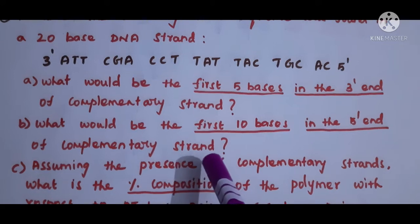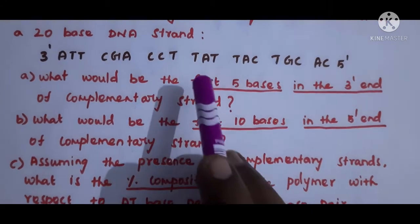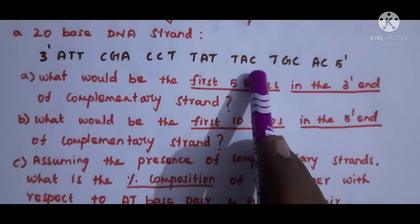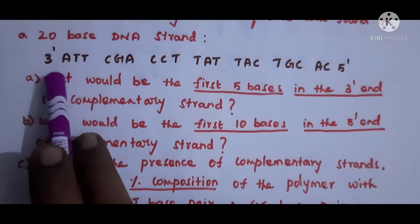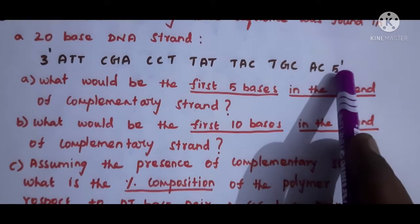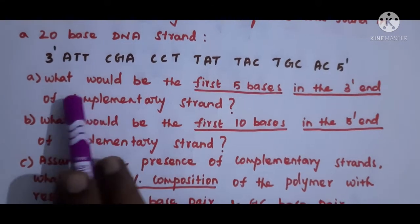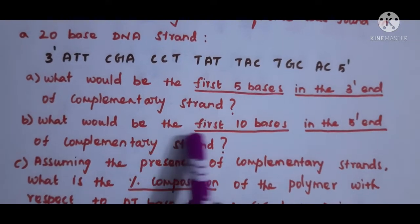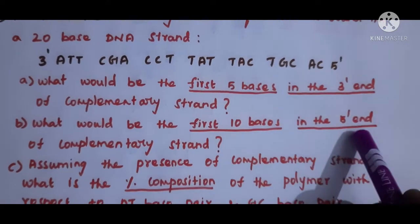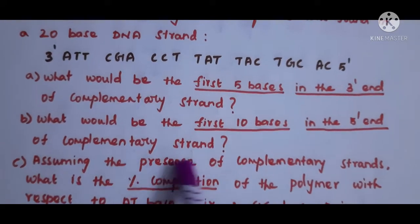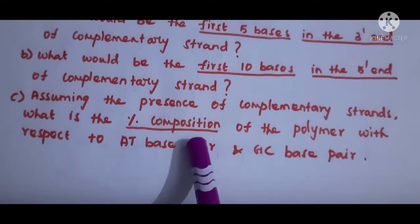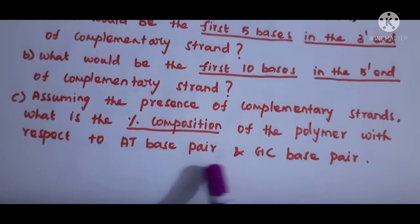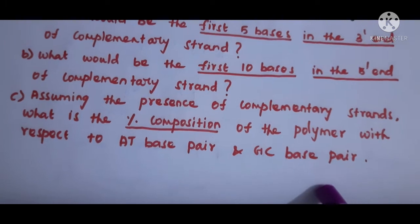Hello students. Today in this video we are going to see how to write the complementary strand for the given DNA strand. In this question they have given a 20-base DNA strand and they are asking: what would be the first 5 bases at the 3' end of the complementary strand, what would be the first 10 bases at the 5' end of the complementary strand, and also the percentage composition of the polymer with respect to AT base pair and GC base pair.